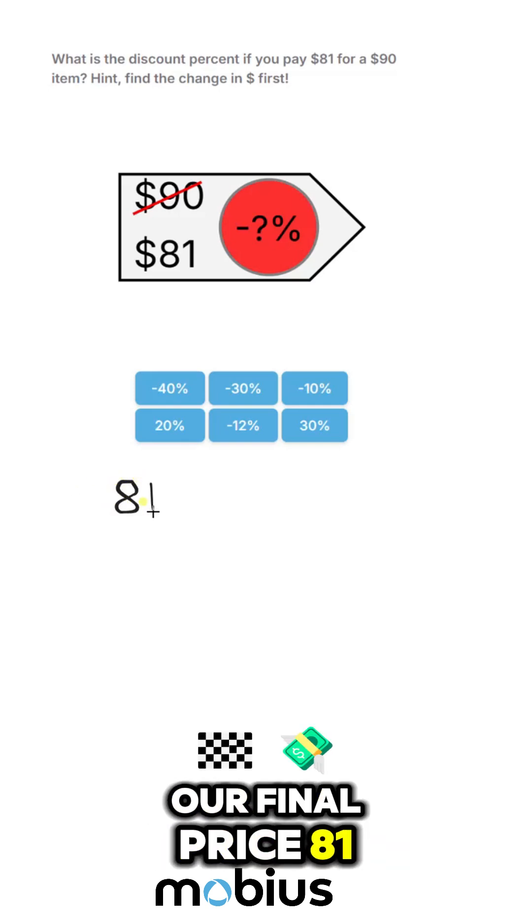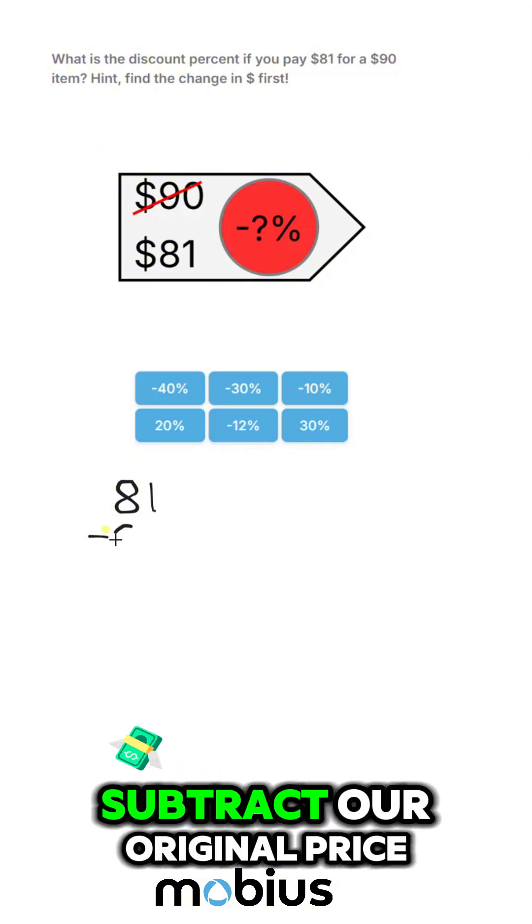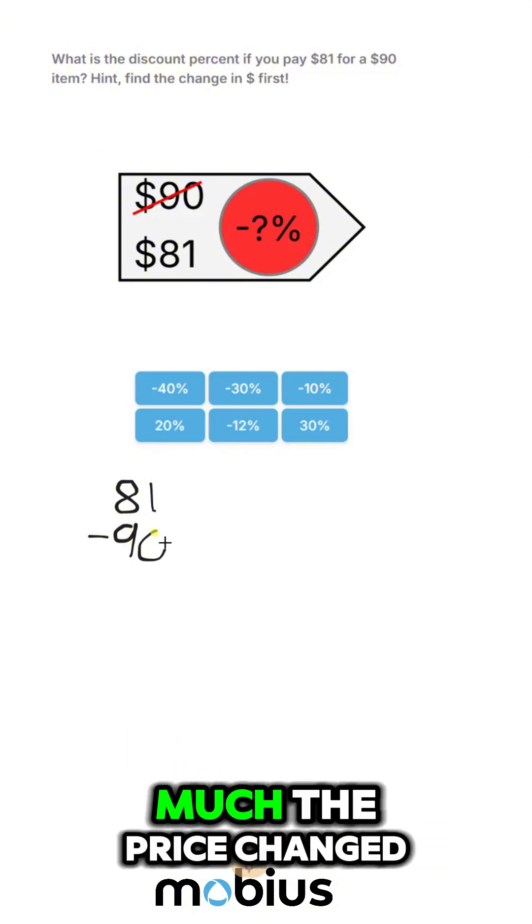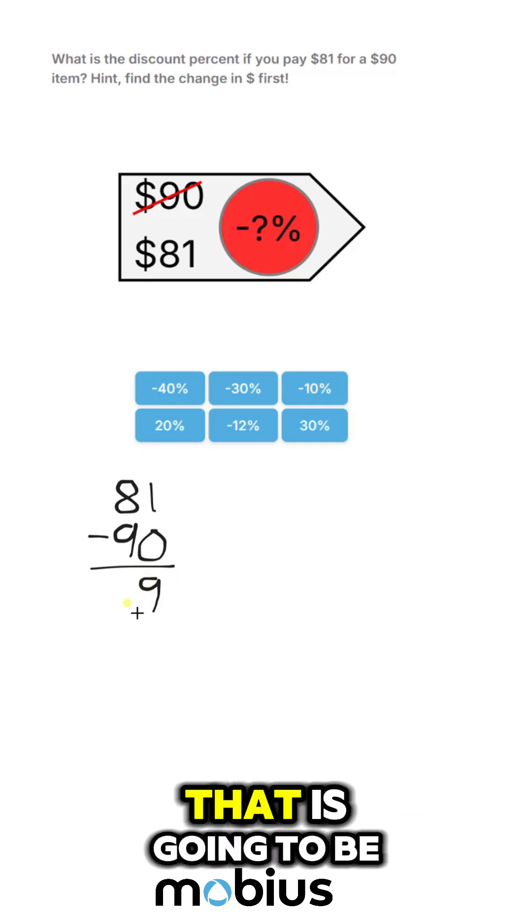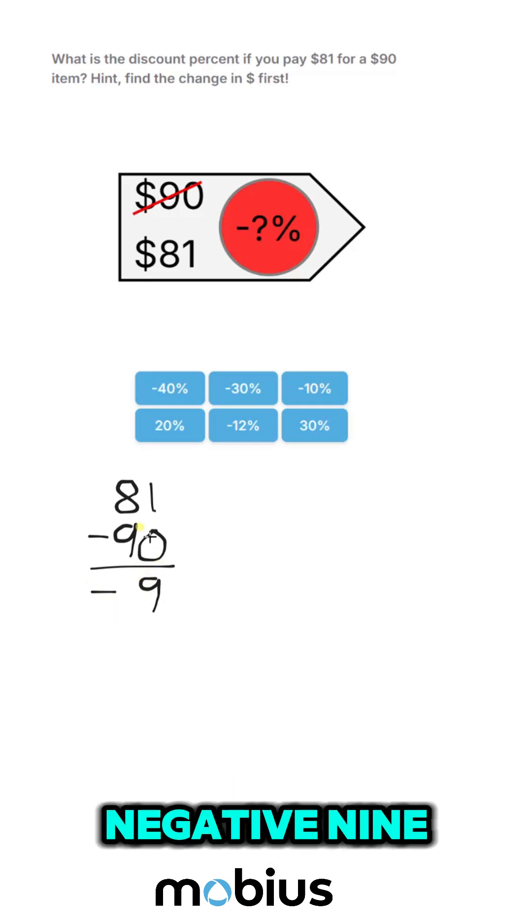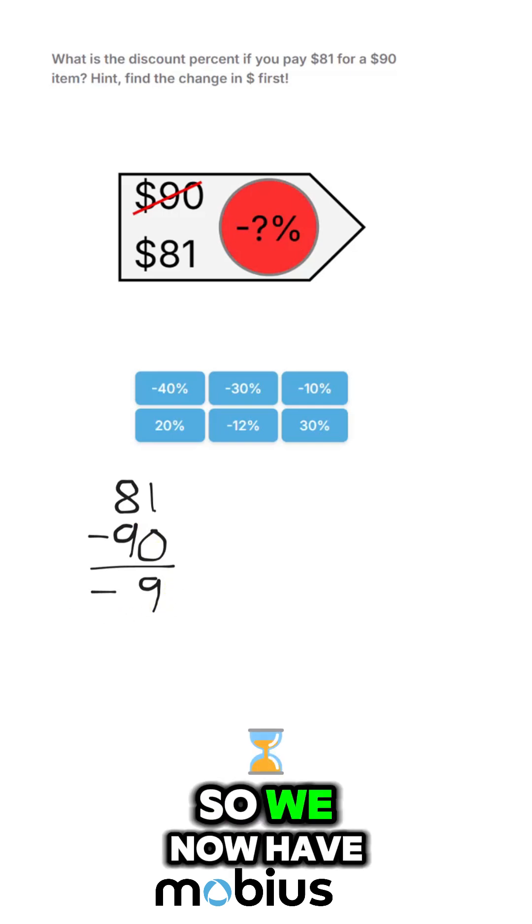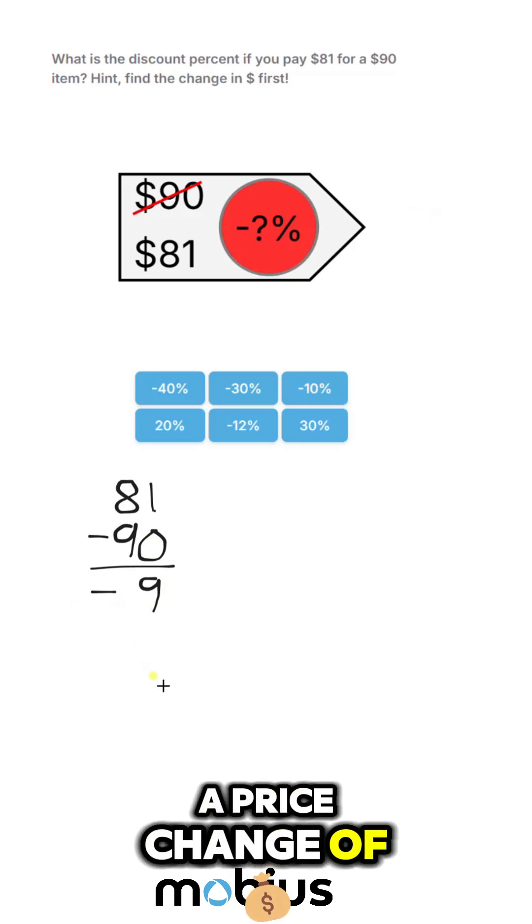final price, 81, and we're going to subtract our original price to find out how much the price changed in absolute terms. So that is going to be negative 9. So we now have a price change of negative 9,